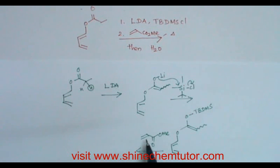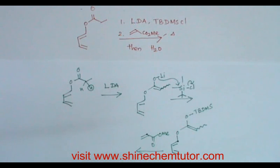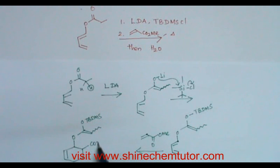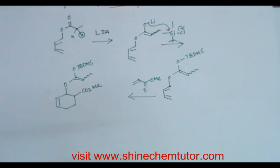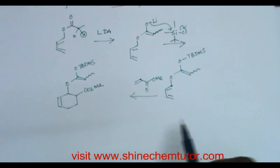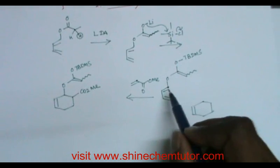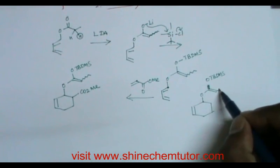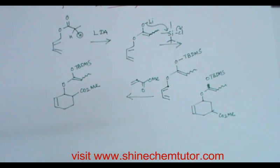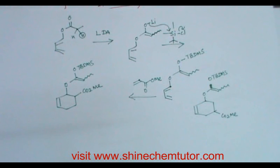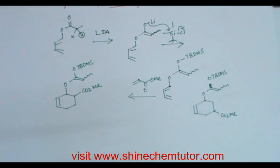The diene can be added to methyl acrylate in two ways. In the first possibility, this carbon may be added to that carbon, giving one product with CO₂Me. In the second possibility, the other carbon is added, also via Diels-Alder 4+2 cycloaddition, giving a different regioisomer. To predict which one is major, you need to know the regioselectivity in Diels-Alder reaction.